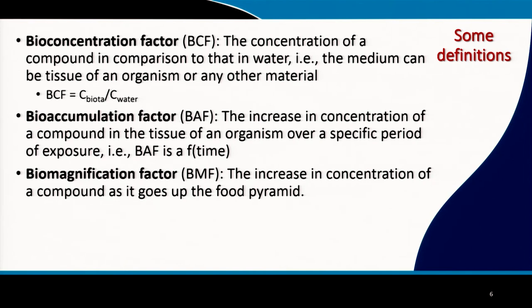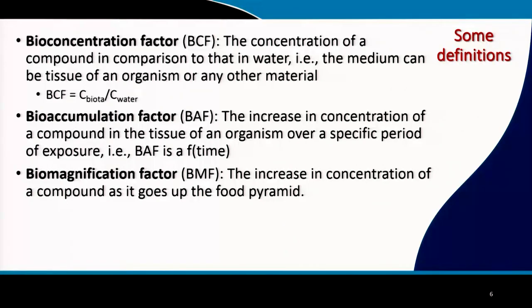The last one is the biomagnification factor. Biomagnification factor tells us about the increase in concentration of any compound as it goes up the food pyramid. Assuming that water is below the lowest trophic level, whatever concentration there is in the water will increase in the tissue of the phytoplankton at the bottom of the pyramid. From the phytoplankton right up to the top of the pyramid, you will get increased concentration of the compound in the tissue of the organisms.